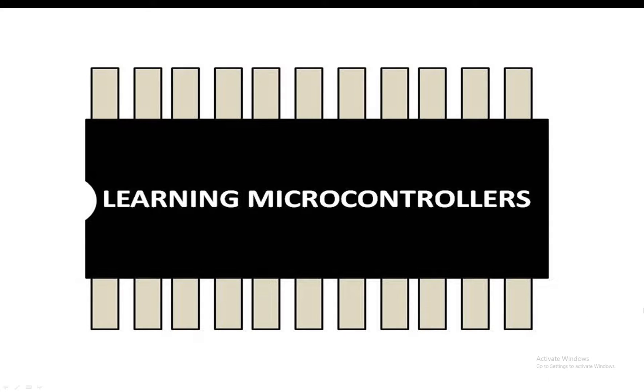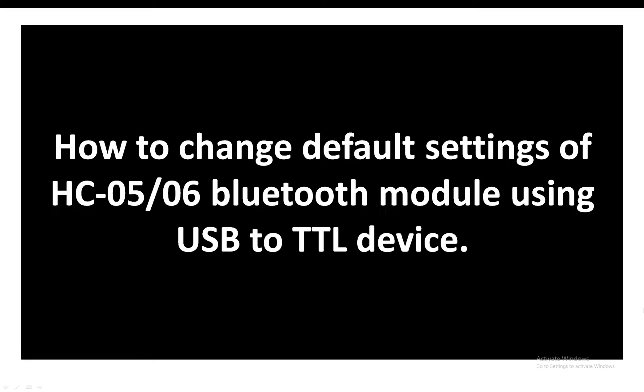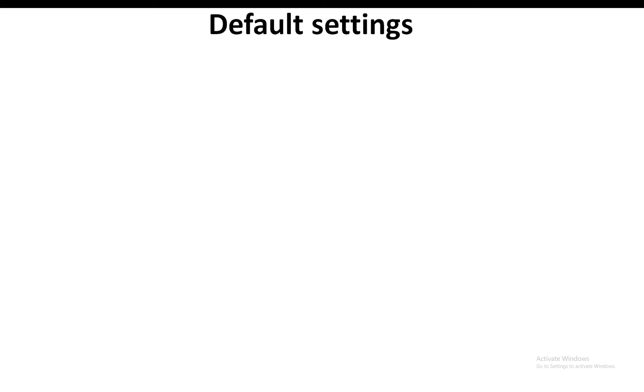Hello guys, welcome to Learning Microcontrollers. In this video I'm going to show you how you can change the default settings of HC05 and HC06 Bluetooth modules using a USB to TTL device. We need this because unlike Arduino, in the PIC we don't have a serial monitor feature, so you have to connect a USB to TTL device with the module to change the settings.